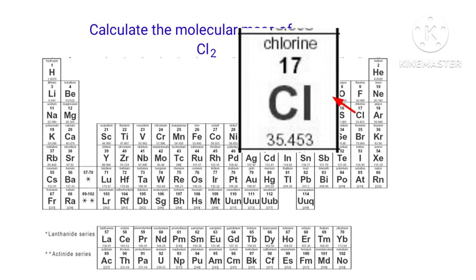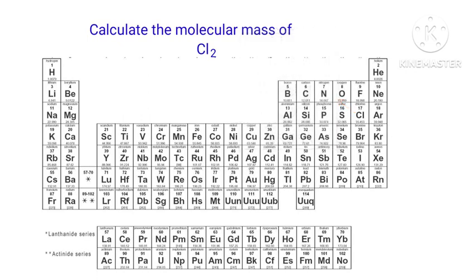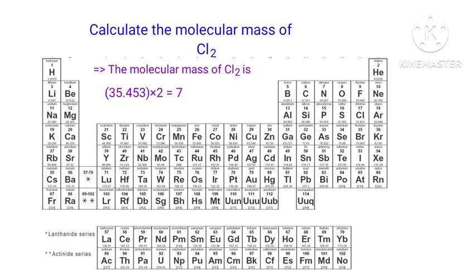The Atomic Mass of Chlorine is 35.453. In the Cl₂ molecule, there are two Chlorine atoms present. So the Molecular Mass of Chlorine is 35.453 x 2, which is equal to 70.906 grams per mole.